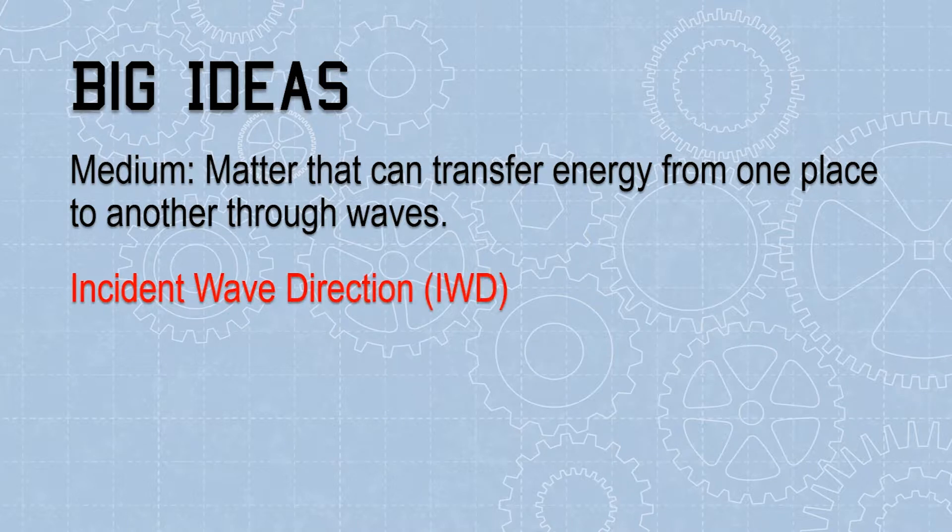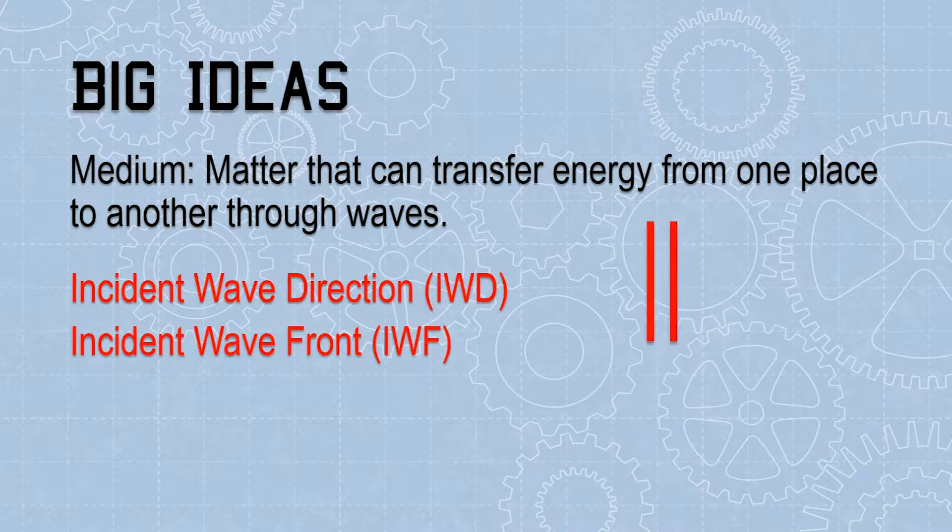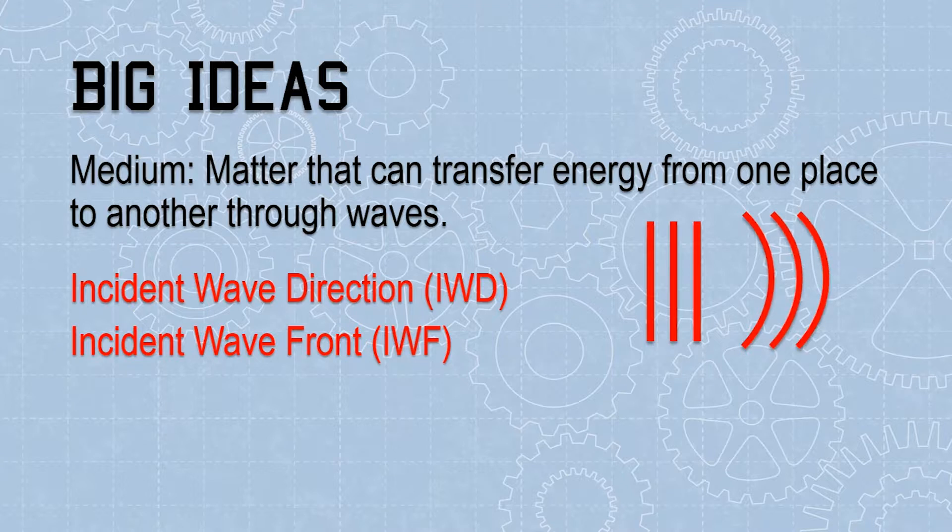The incident wave direction is the direction of the initial wave. The incident wave fronts are the fronts, or crests, of the wave. These can either be plain or curved. The incident wave fronts are perpendicular to the incident wave direction.